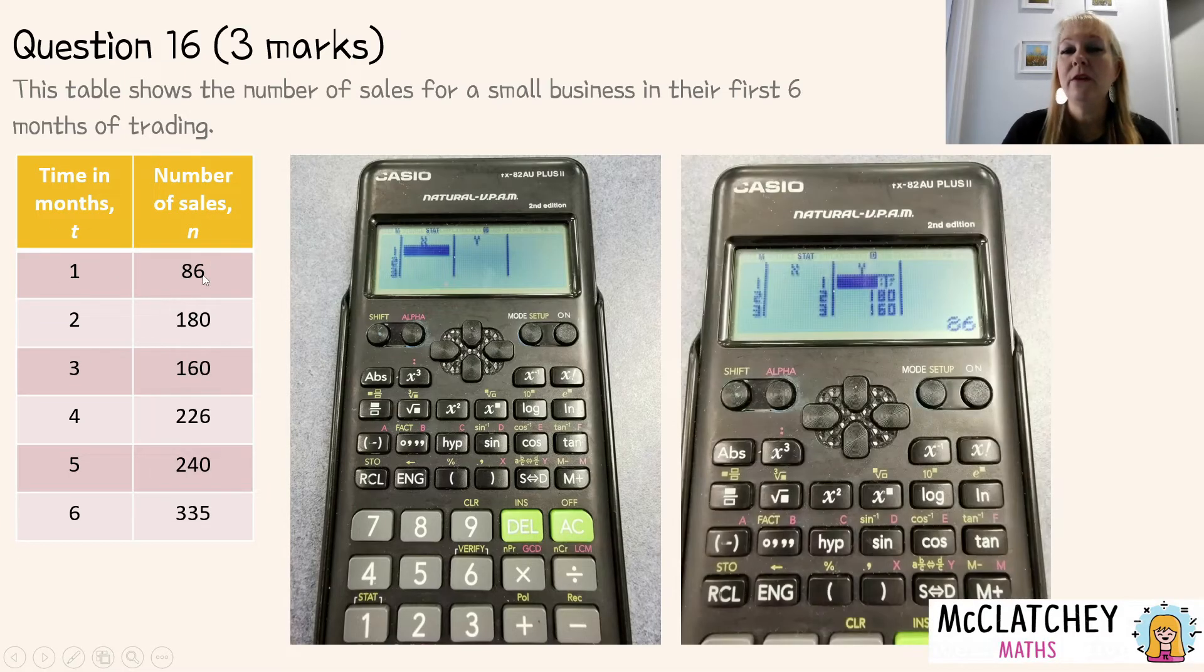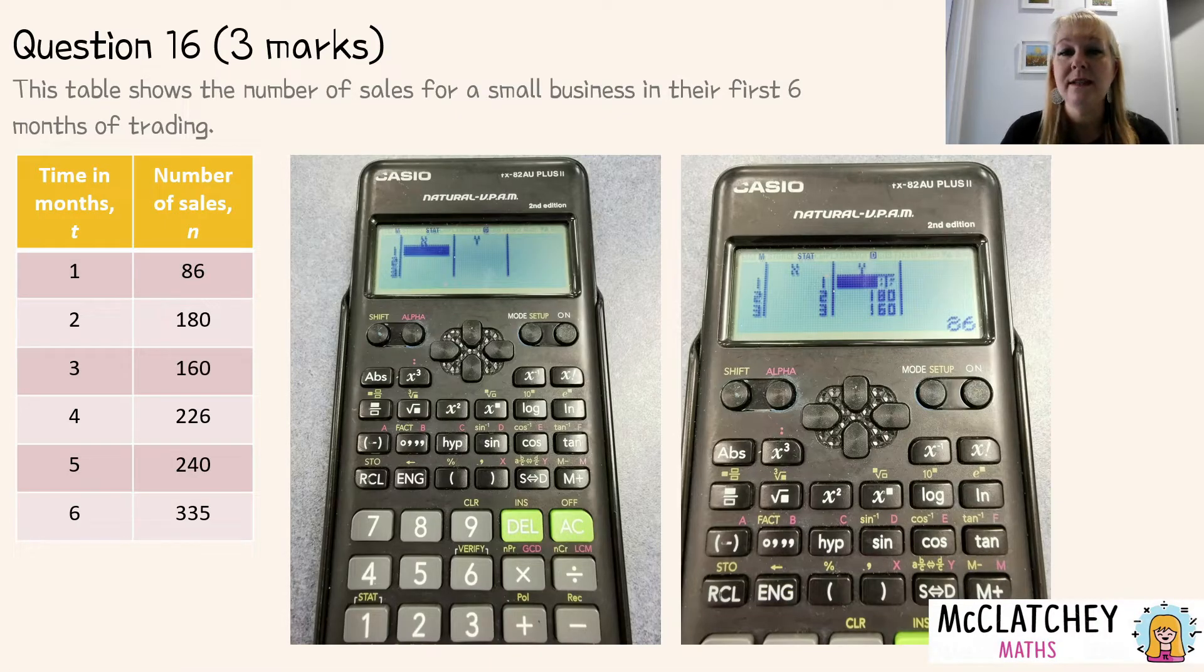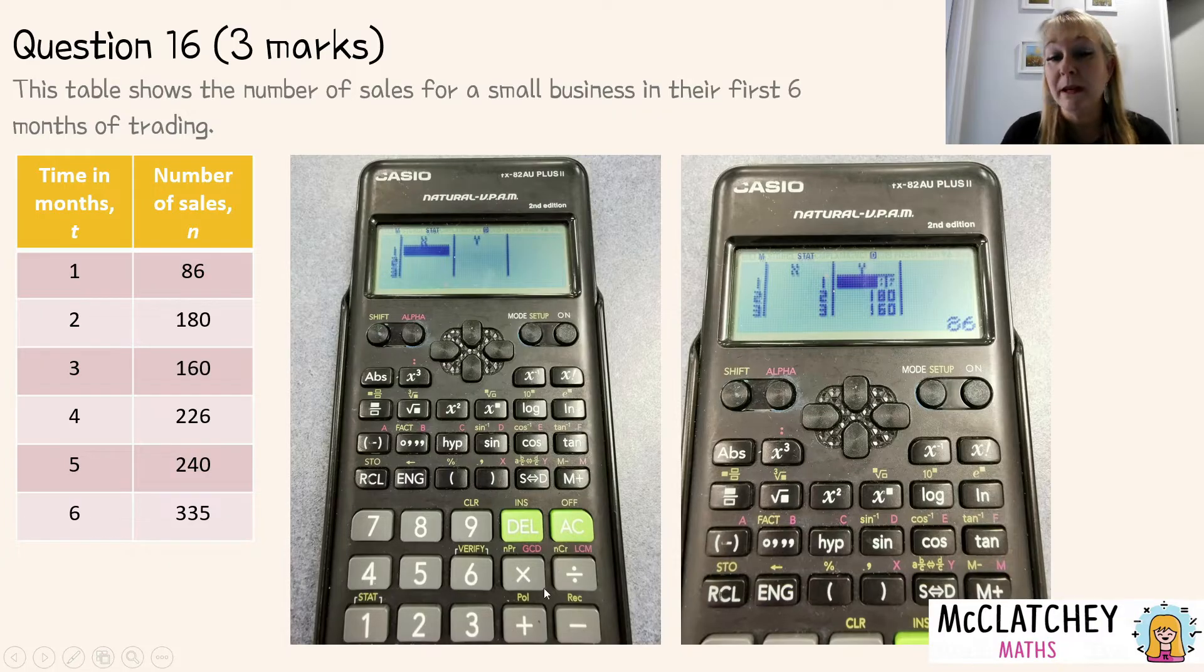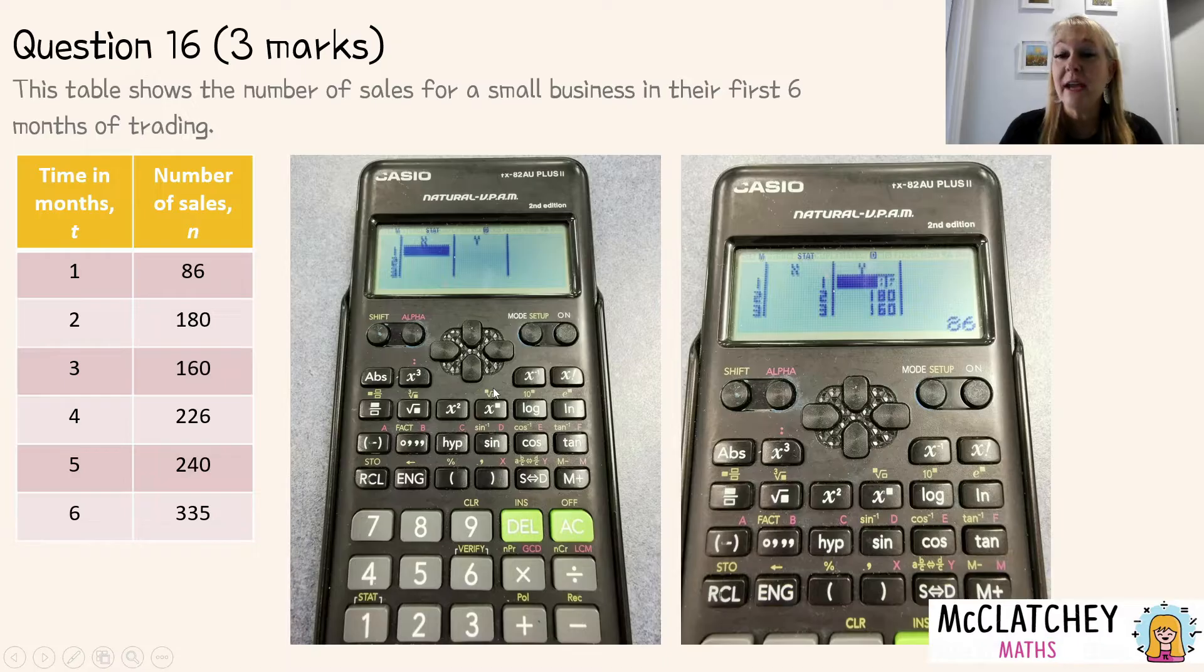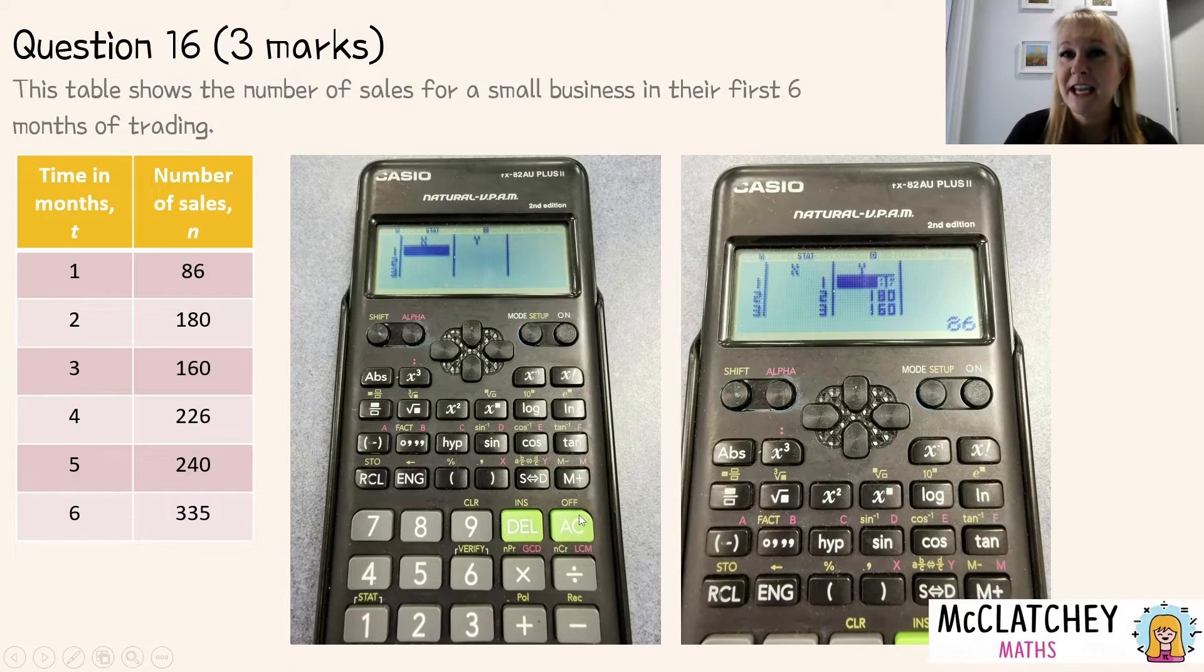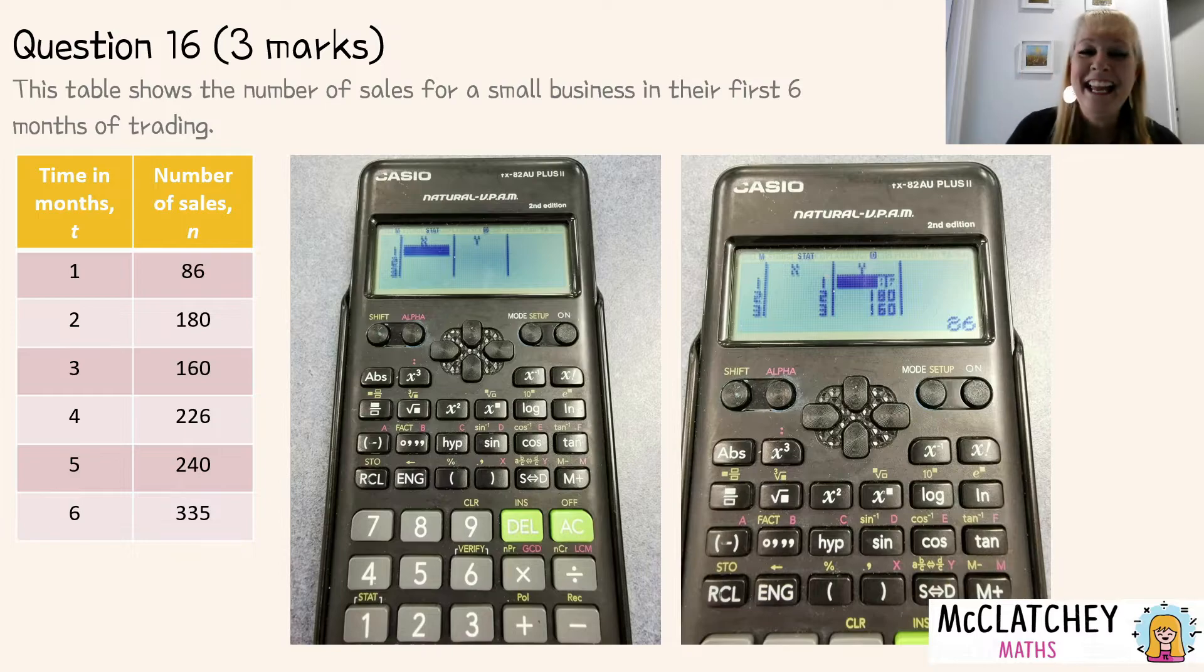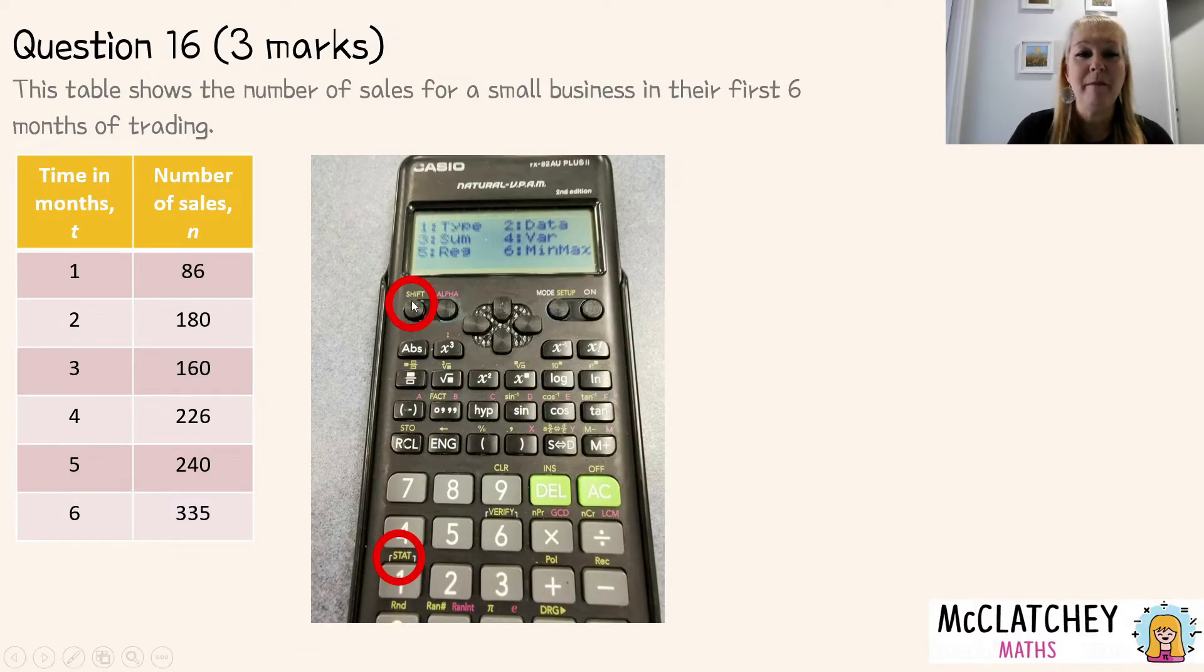This should be familiar with you. You should have been doing this with your teacher and we're simply going to translate this information. These are our x values and these are our y values. I know it says t and n but don't worry about that because this is our independent variable and this is our dependent variable. Once you've entered those into the table it will look something like this. To move around this little table here on your calculator you're going to use your equals button which is right underneath here.